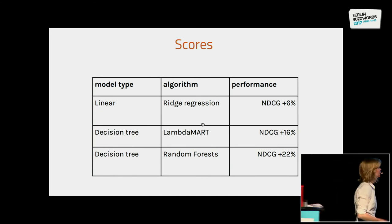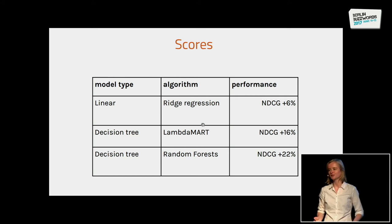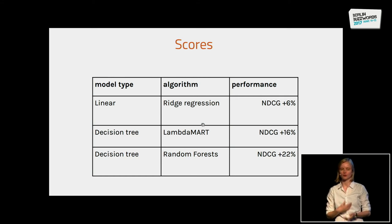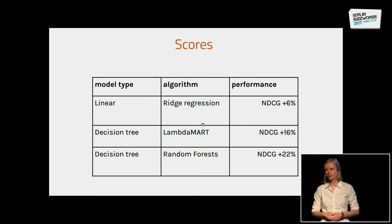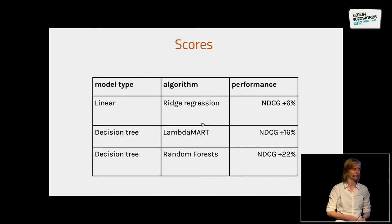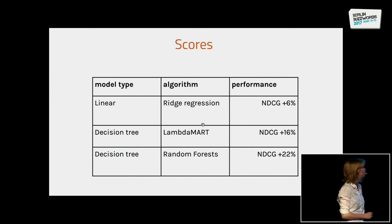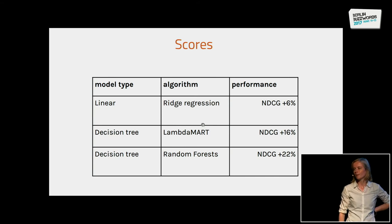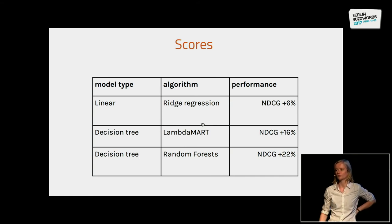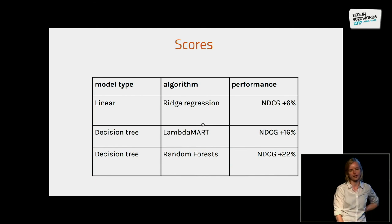Did it work? For us, yes. We tried re-ranking with a linear model and with two decision tree-based models: LambdaMART and Random Forest, which uses LambdaMART as a submodel. With the linear model the average increase in NDCG was plus 6%. With the two decision tree models, one gave an increase of 16% relative to the baseline of no re-ranking at all, and the other decision tree-based model had an NDCG increase of 22%, which is pretty good.